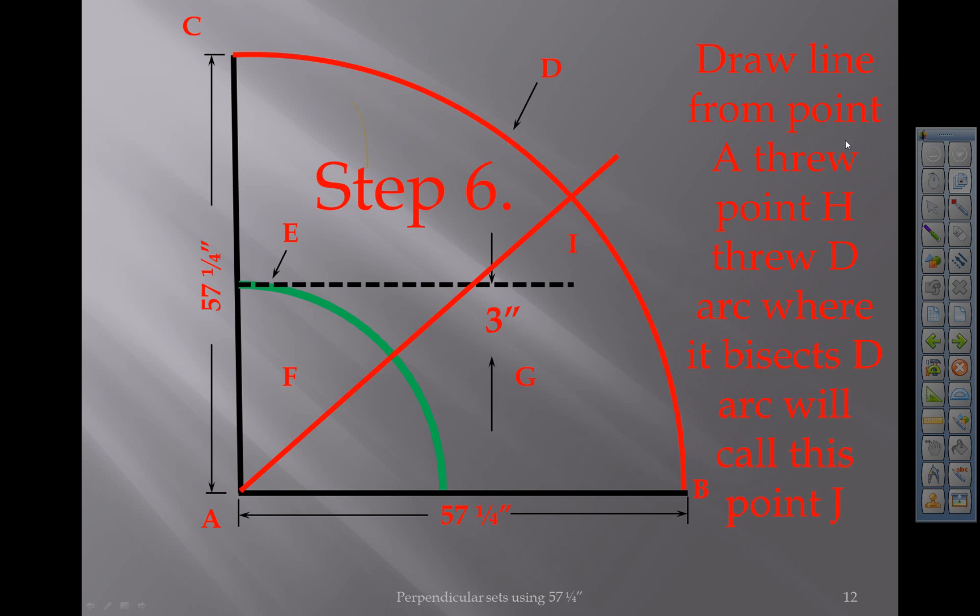Draw a line from point A through point H through D arc, or bisect D arc. We'll call this point J.